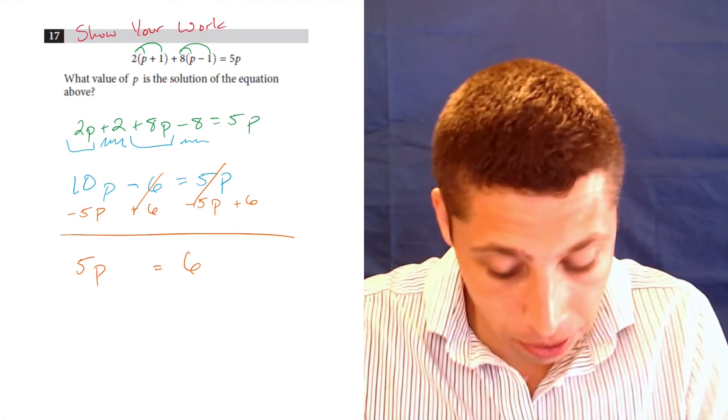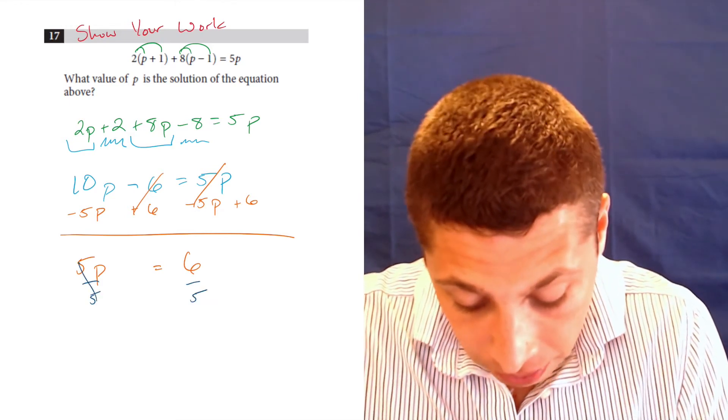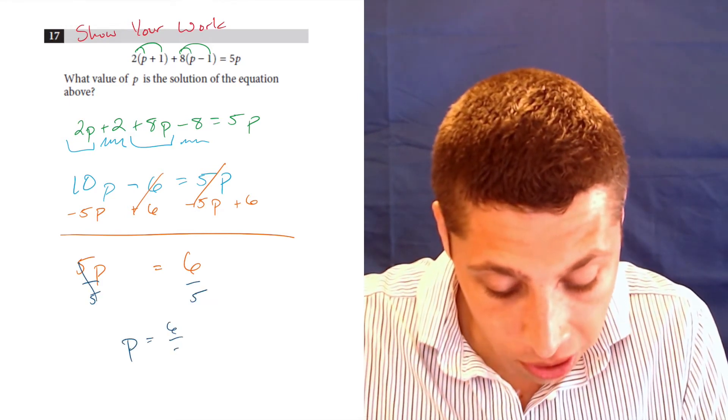And the final step here is just to solve for p. And so we divide by 5, and p is equal to 6 fifths.